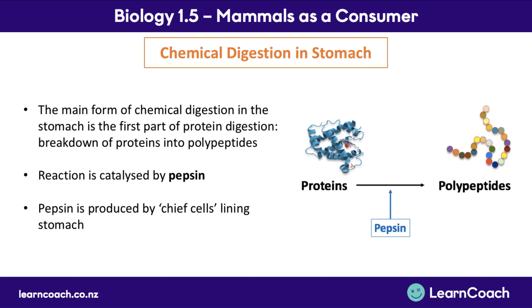In the stomach, the main form of chemical digestion is the first part of protein digestion — the breakdown of proteins into polypeptides by pepsin. Pepsin is produced by chief cells which line the stomach.